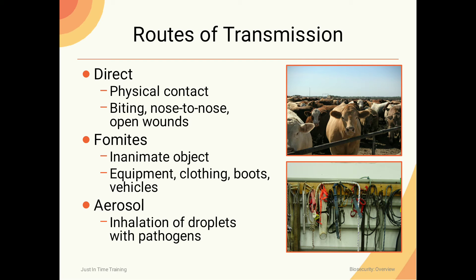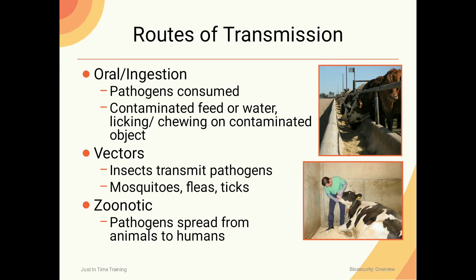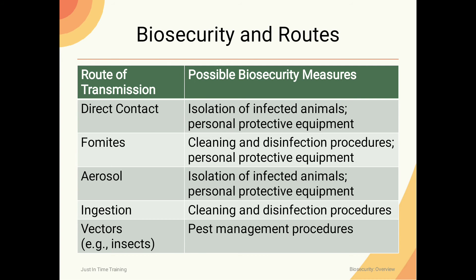For example, COVID-19 also spreads through aerosol inhalation of droplets in the air. Oral or ingestion transmission occurs when pathogens are consumed through contaminated feed or water, or by licking and chewing contaminated objects. Vectors and zoonotic routes also exist, where pathogens spread from animals to humans.